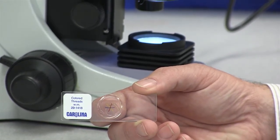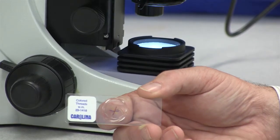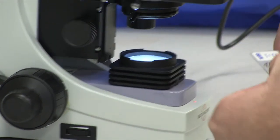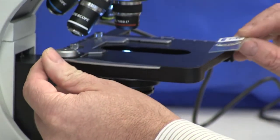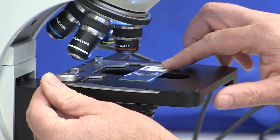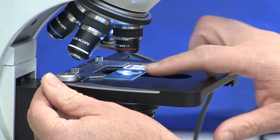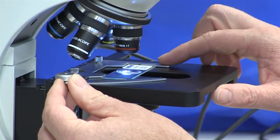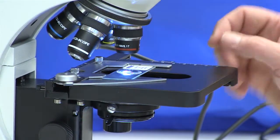The first thing we want to do is place the slide on the microscope. To do that, we slide one of the stage clips back and slip the microscope slide so that it's completely cradled by the stage clips.